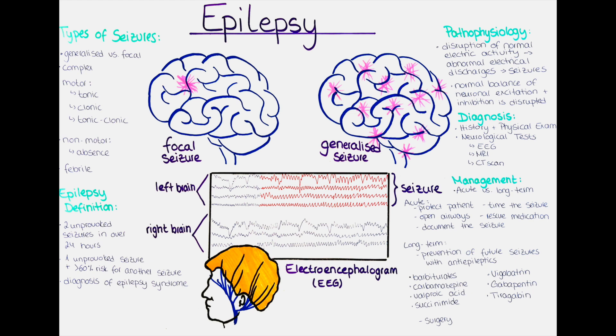Fifth, seek medical attention: if the seizure lasts longer than 5 minutes, if the patient is having difficulty breathing, or if the seizure is part of a cluster of seizures, further first aid measures may be required. And lastly, document the seizure: record the details including the time of onset, duration, and any associated symptoms. This information can be helpful for the patient's ongoing management and treatment.